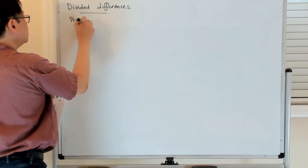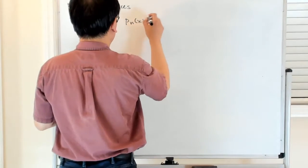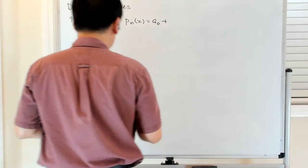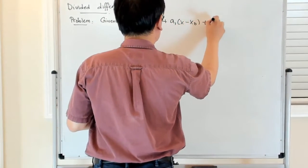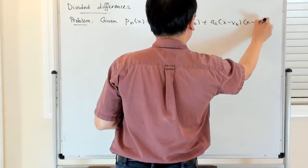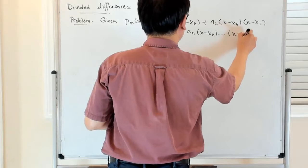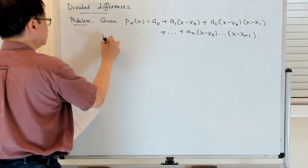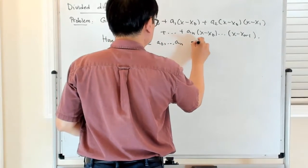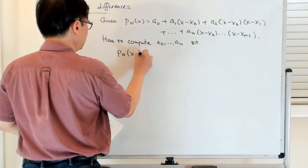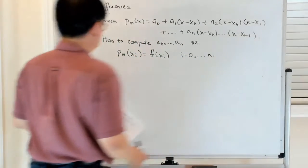The problem is that given a polynomial Pn(x) in Newton form, which is a0 plus a1(x - x0) plus a2(x - x0)(x - x1), all the way up to an(x - x0)...(x - xn-1), how to compute a0 to an such that Pn(xi) = f(xi) for i equals 0 to n.